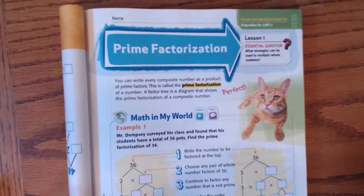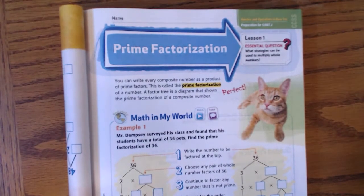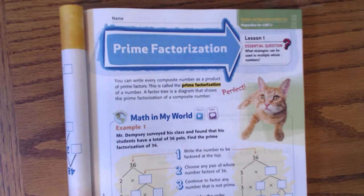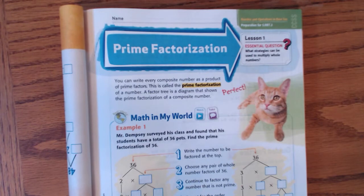Prime factorization is just breaking down a number so that it is the product, which means you're multiplying, by prime factors. We are going to talk about what prime numbers are in class, and you will have a worksheet that talks about prime factors and what prime numbers are.